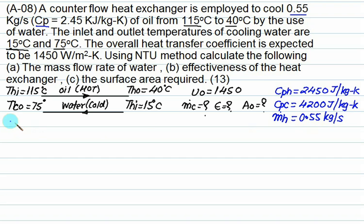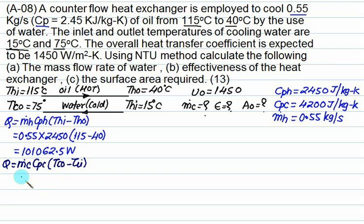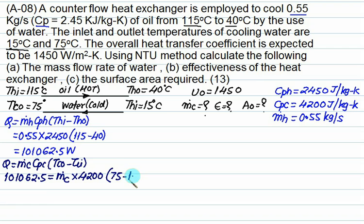Q equals m-dot-h times Cph times (Thi minus Tho) equals 0.55 times 2450 times (115 minus 40). This gives the value of Q. Setting Q equal to m-dot-c times Cpc times (Tco minus Tci) equals m-dot-c times 4200 times (75 minus 15), we can solve for mass flow rate of cold fluid m-dot-c.